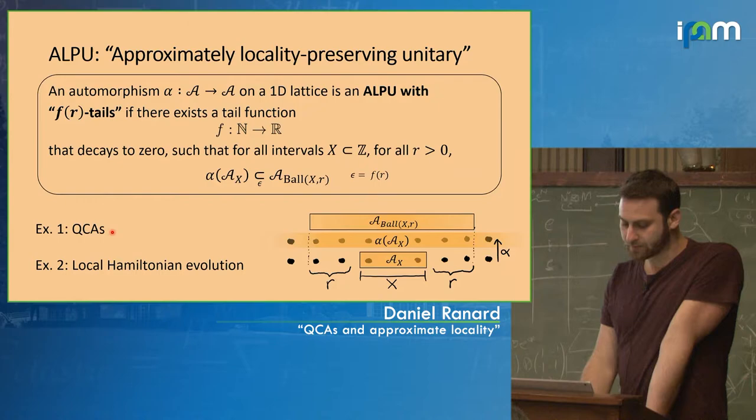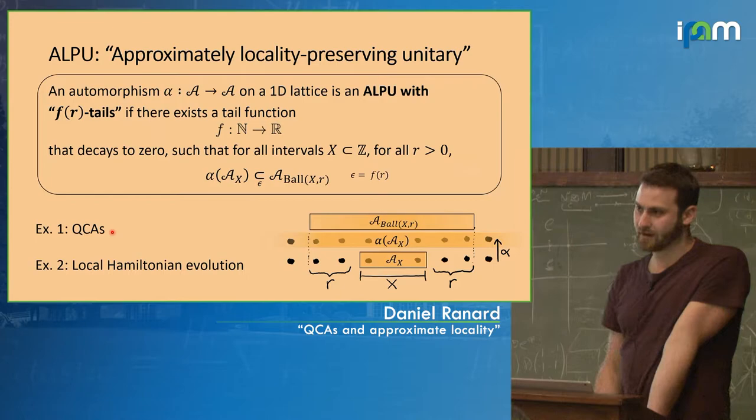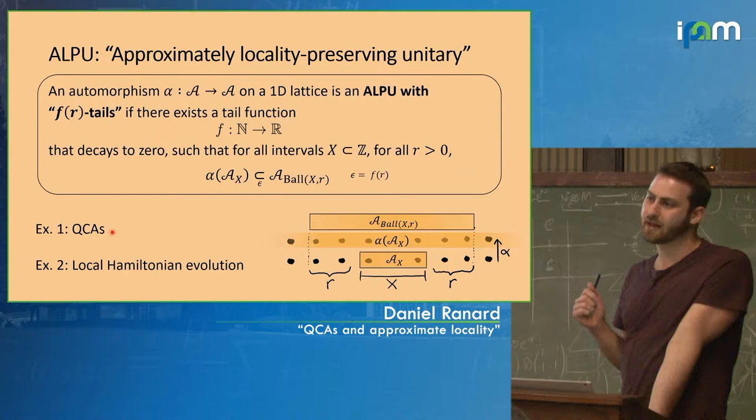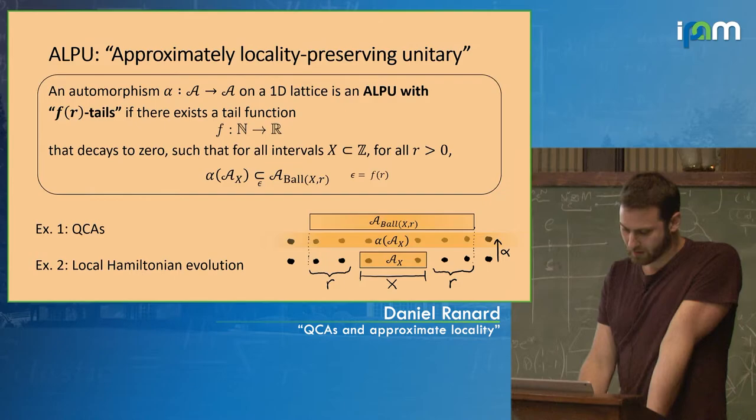The natural question is: are QCAs and Hamiltonian evolution the only ALPUs? The punchline is yes, that will be the case in 1D, and we still don't know for higher dimensions.